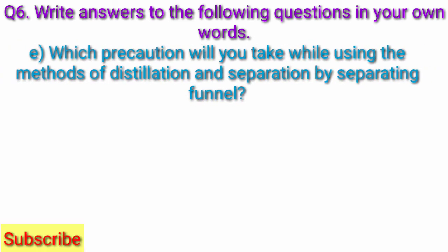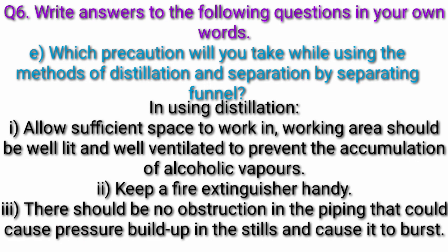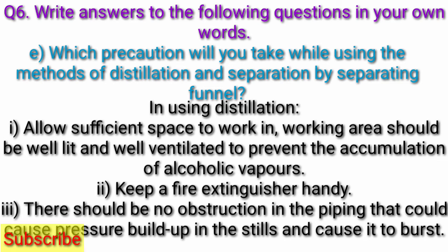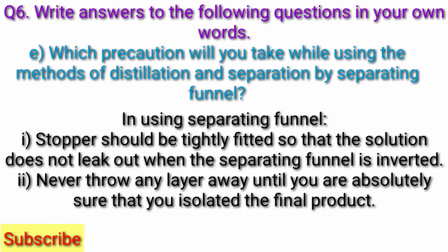Question E: Which precautions will you take while using the methods of distillation and separation by separating funnel? In using distillation: allow sufficient space to work in. The working area should be well lit and well ventilated to prevent the accumulation of alcoholic vapors. Keep a fire extinguisher handy. There should be no obstruction in the piping that could cause pressure buildup and cause it to burst. In using separating funnel: the stopper should be tightly fitted so that the solution does not leak out when the separating funnel is inverted. Never throw any layer away until you are absolutely sure that you have isolated the final product.